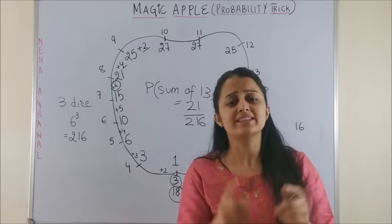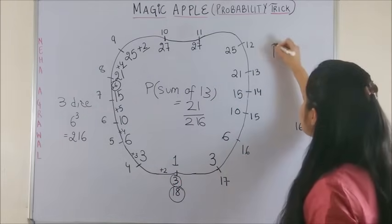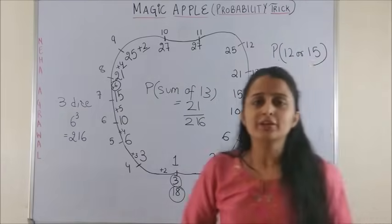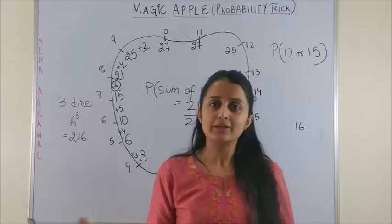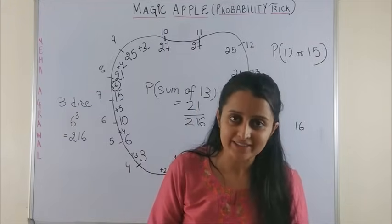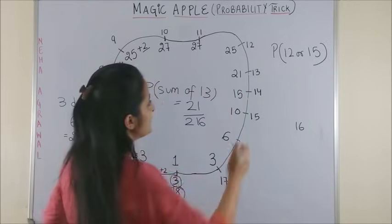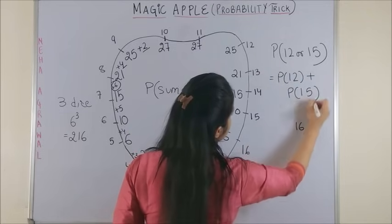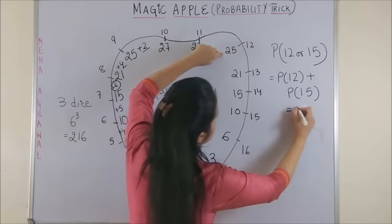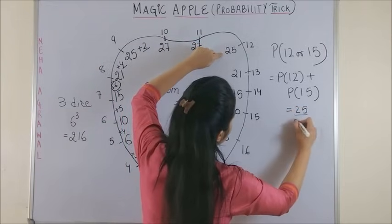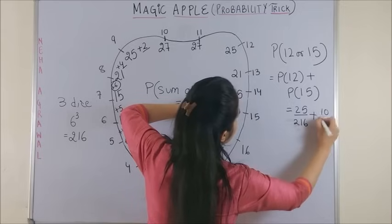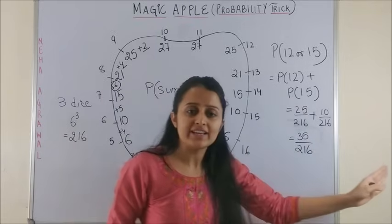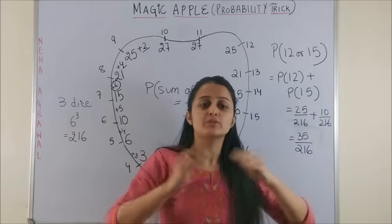Similarly, suppose the question is not that basic and it says: what is the probability of getting the sum to be 12 or 15? Then you know these are mutually exclusive events. In that case, all you need to do is add the probability of getting sum 12 and the probability of getting sum 15. That gives us 25/216 plus 10/216, so 35/216 is the answer. Why am I not taking the intersection? Because I cannot get the sum to be 12 and 15 simultaneously.